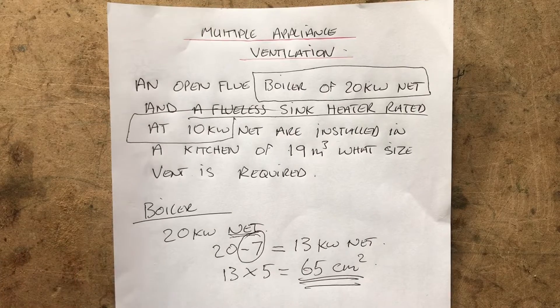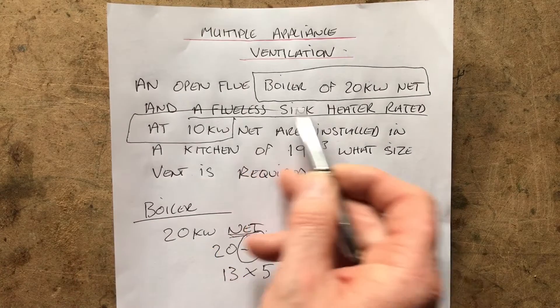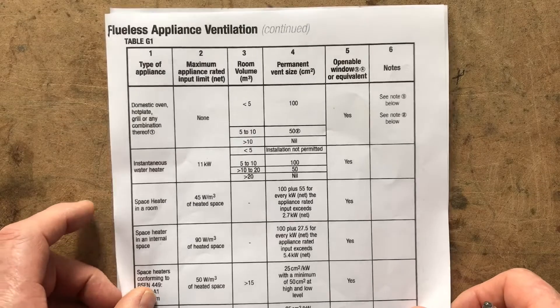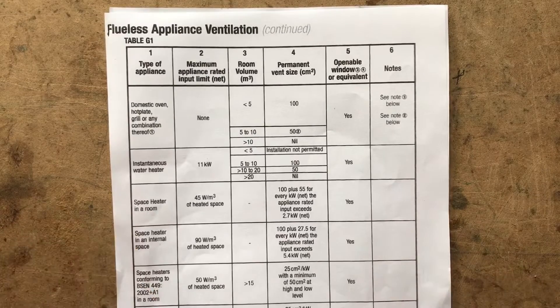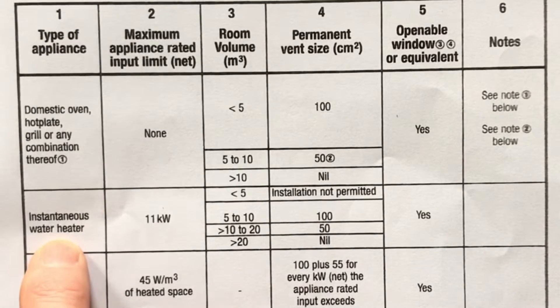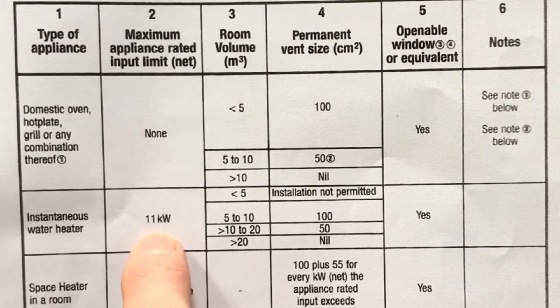Now it also says we have a sink heater — it's flueless. You have 10 seconds to figure out where you would find the ventilation requirements for this flueless water heater. We need to use our chart. So we go to our water heater — there's our flueless water heater. It says it's rated at 10 kilowatts and we can go up to 11, so we know we can use it.